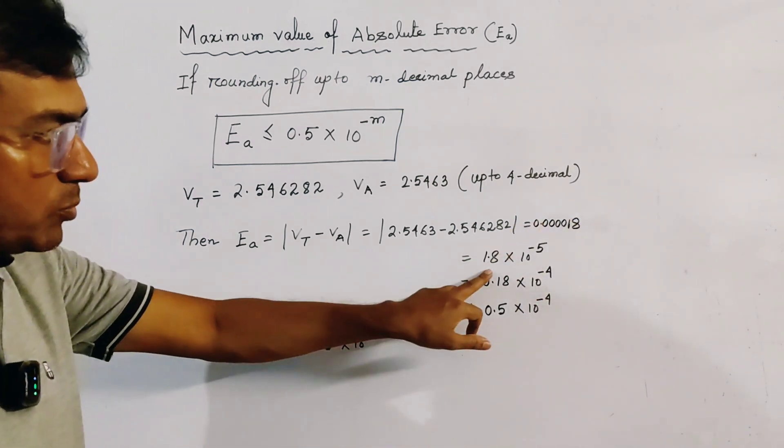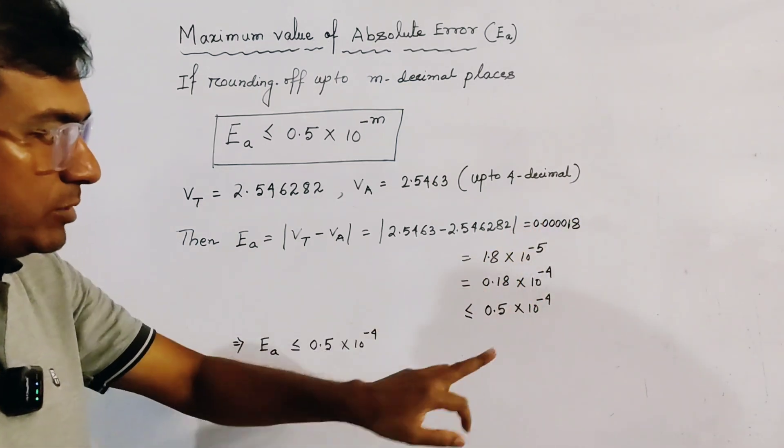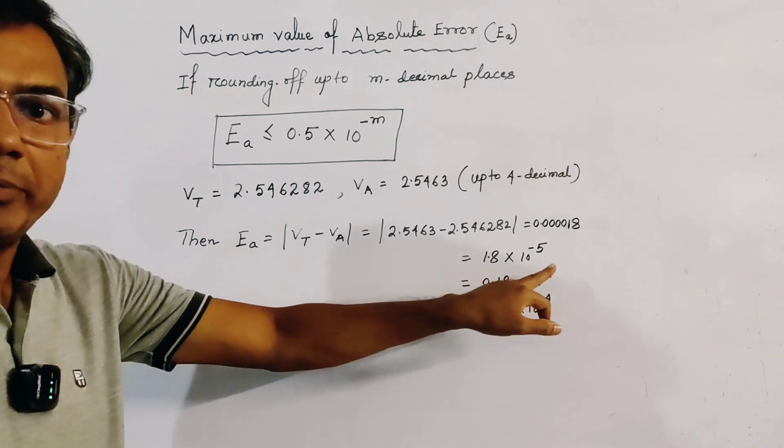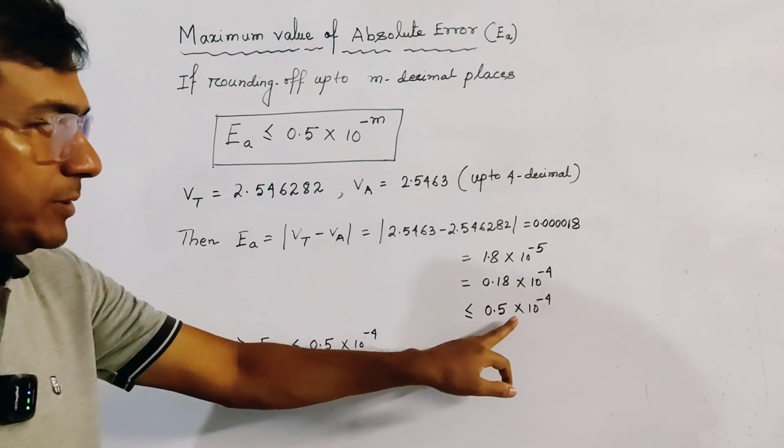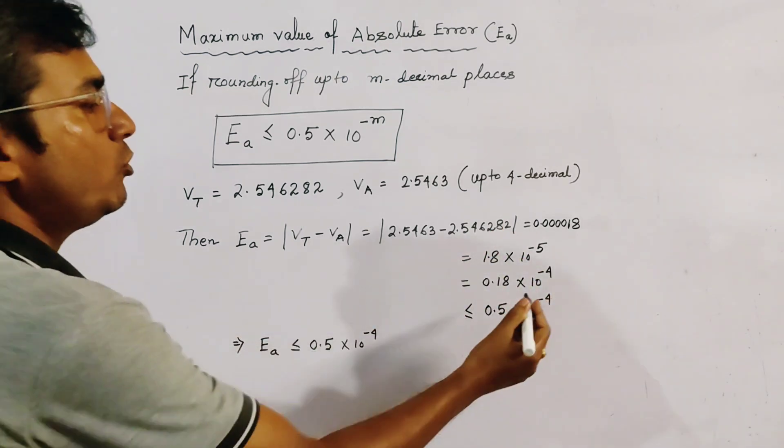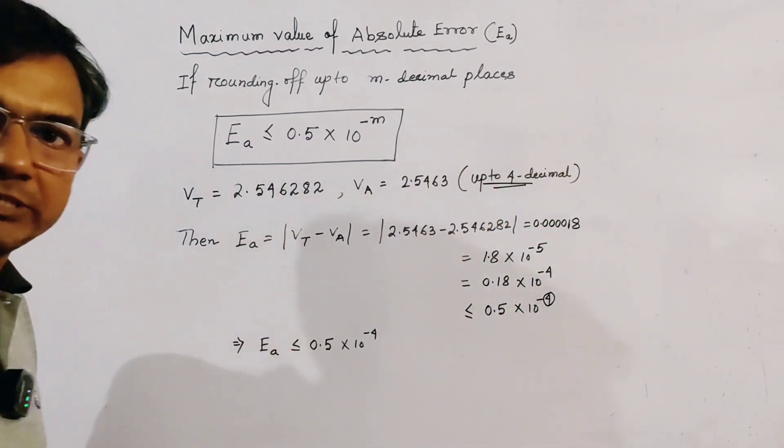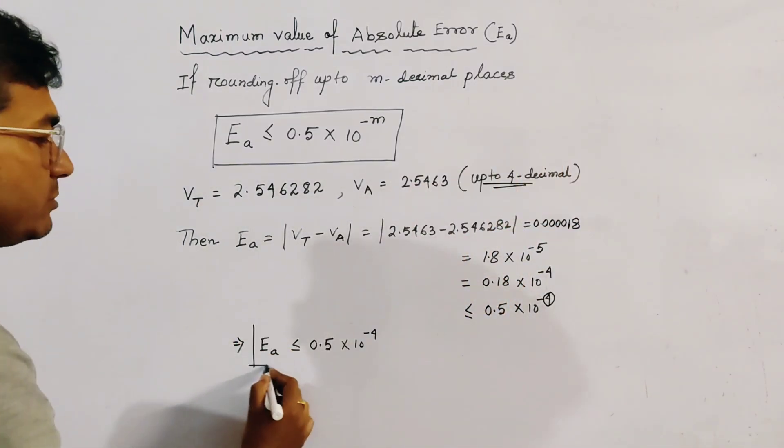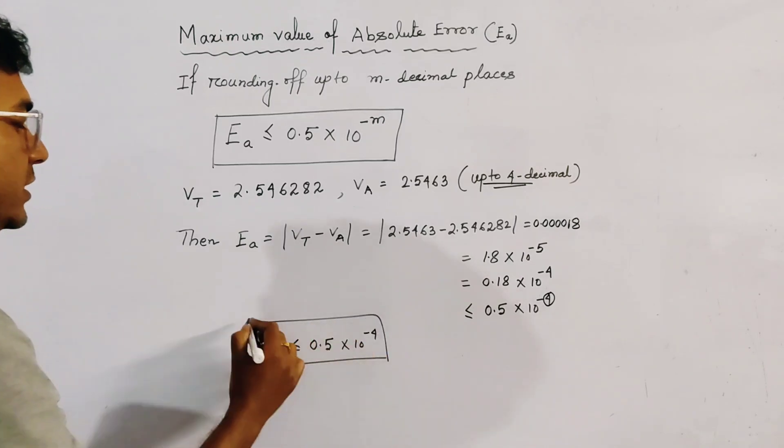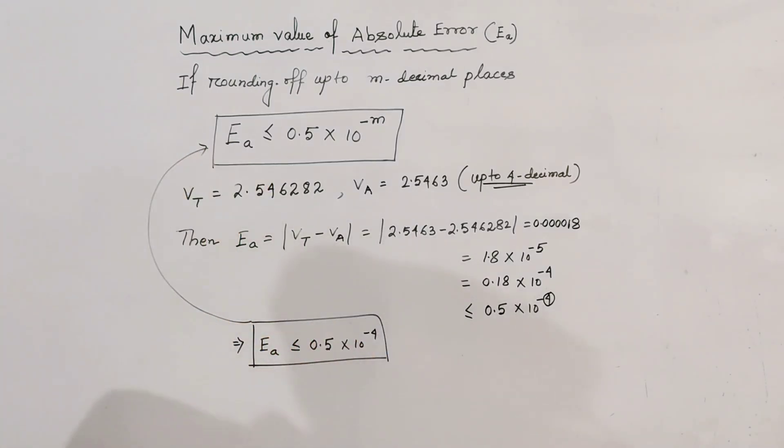This can be written as 1.8 times 10 to the power minus 5, or 0.18 times 10 to the power minus 4. This is less than 0.5 times 10 to the power minus 4, where 4 is the number of decimal places given. So the maximum value is verified by this formula. Thank you.